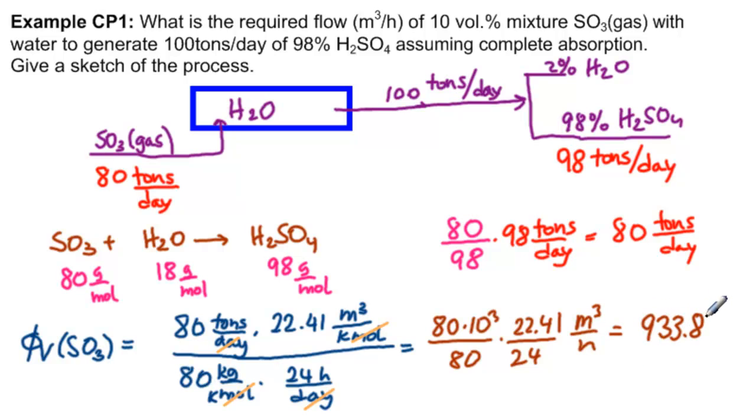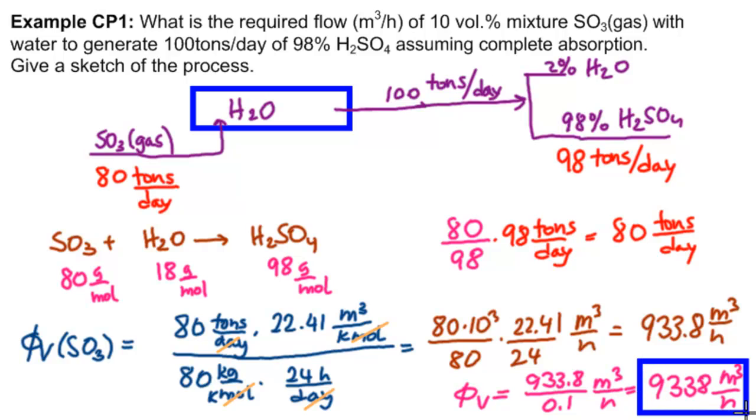Now this is 10%, so our flow is actually 933.8 over 0.1 meters cubed per hour, which is 9,338 meters cubed per hour. So this is the answer to the question.